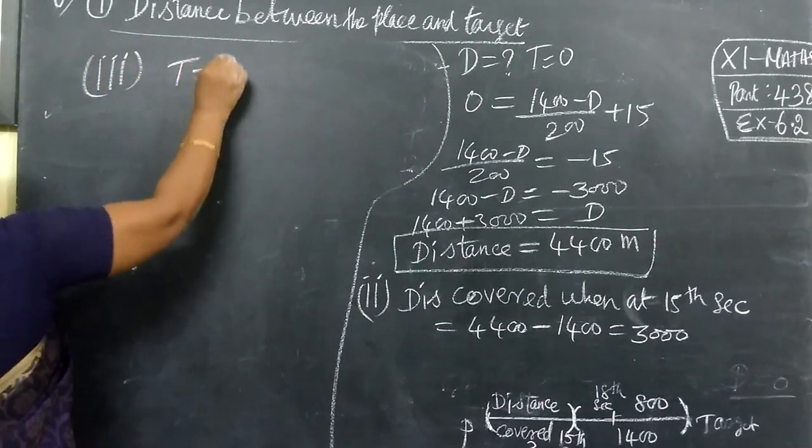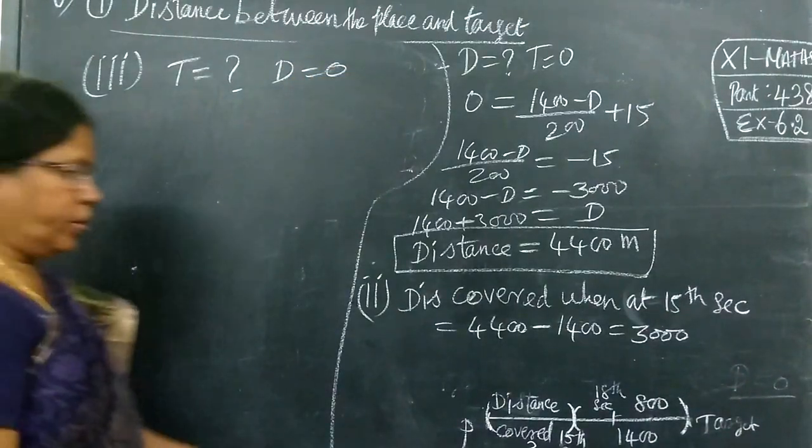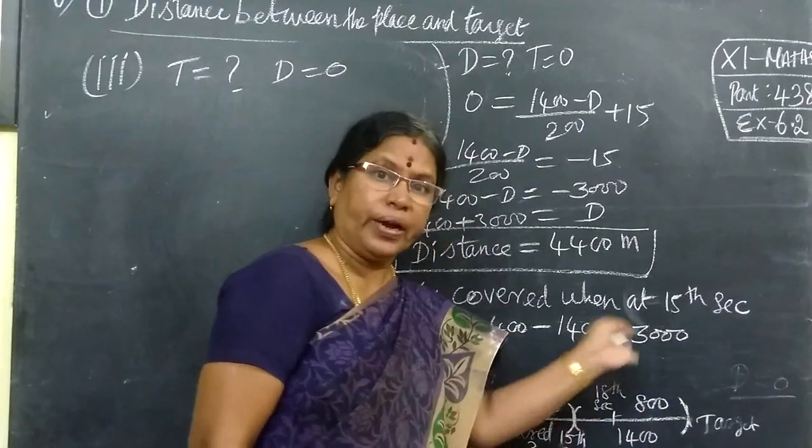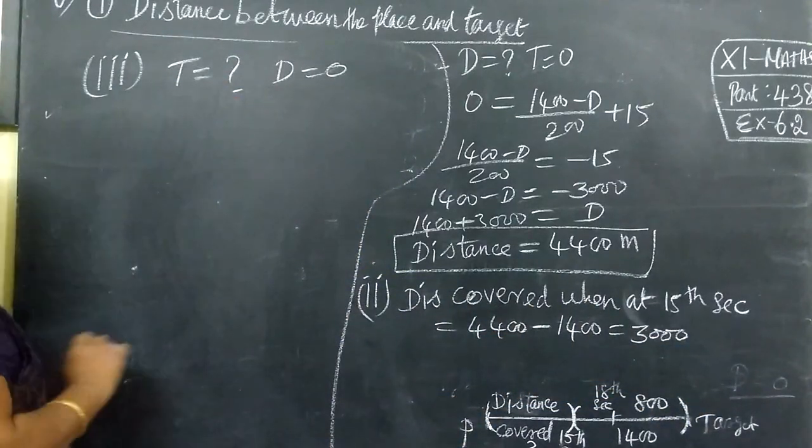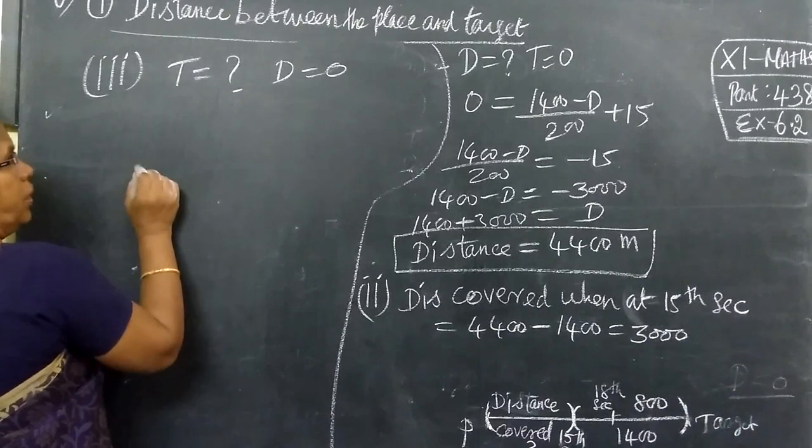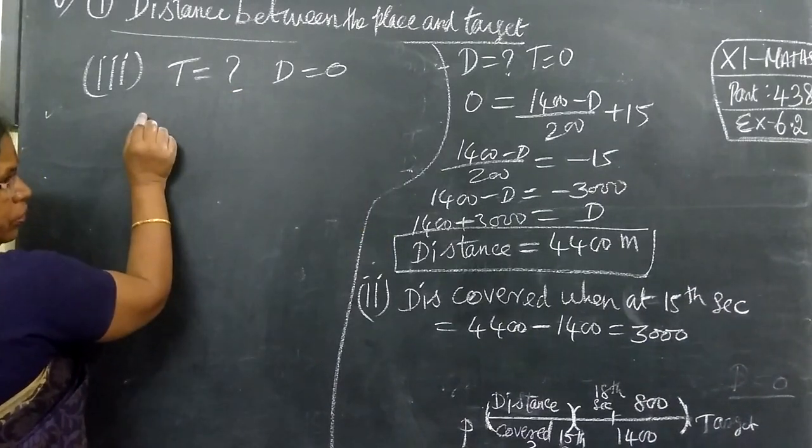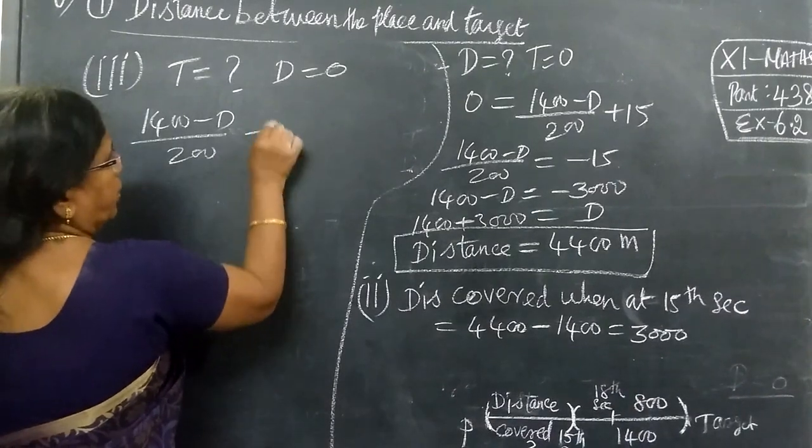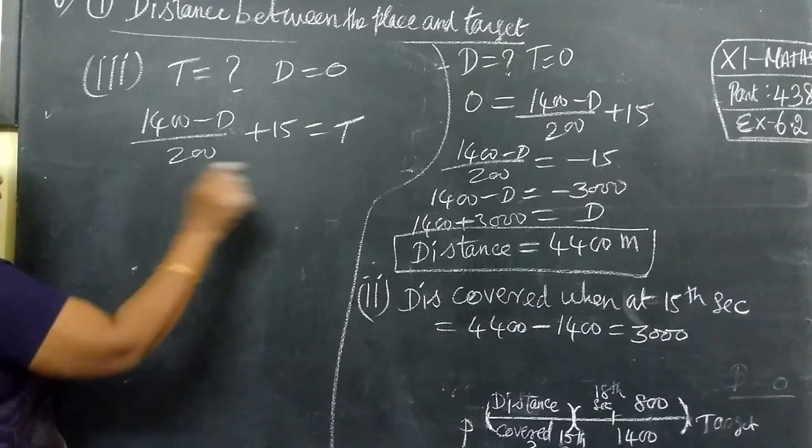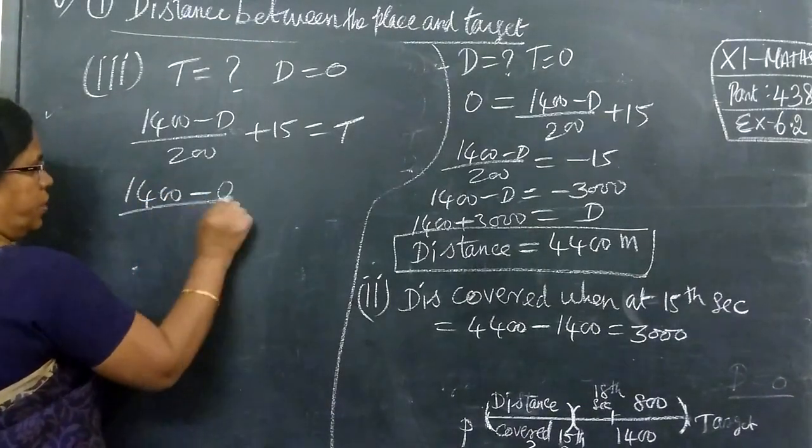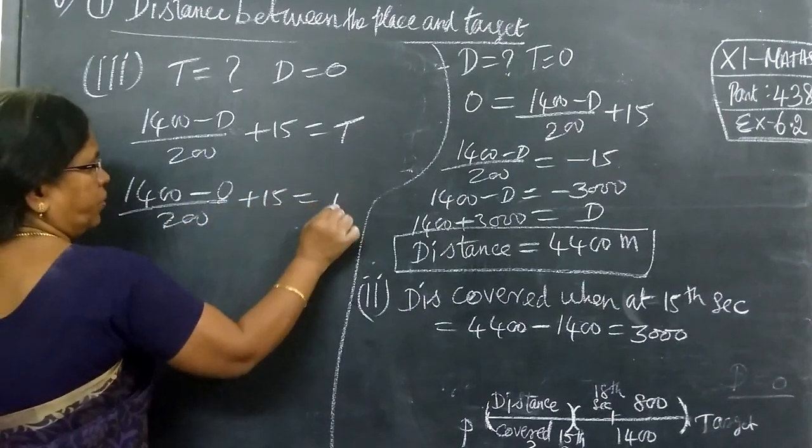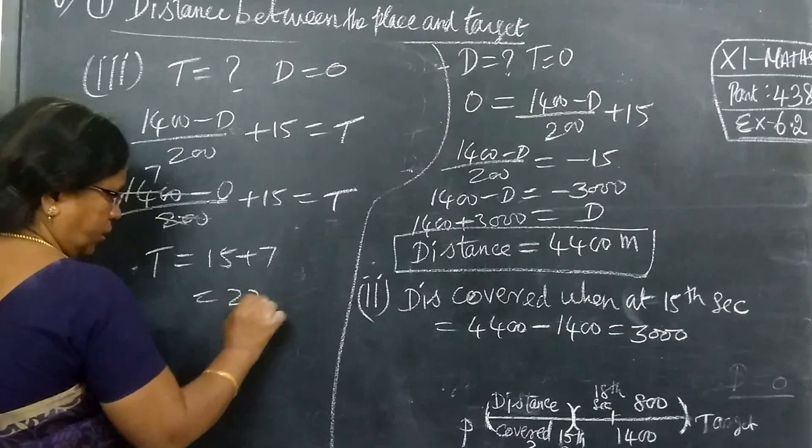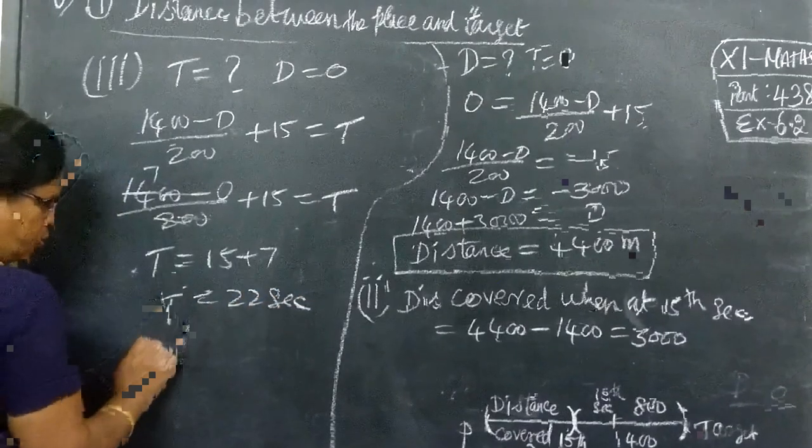Third case - time is 0, full distance is 0. In this way, when it reaches the target, the distance is 0. It will take 22 seconds to reach the target.